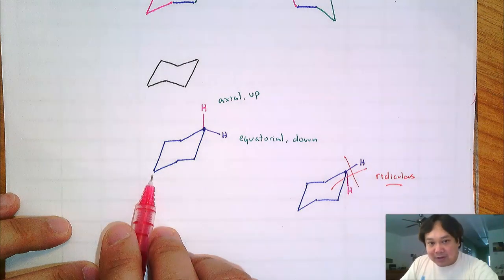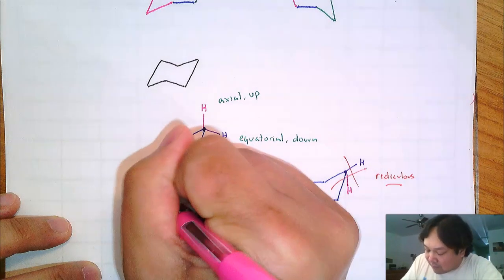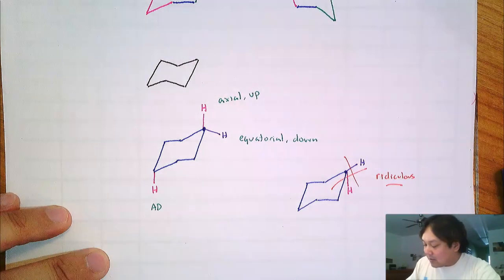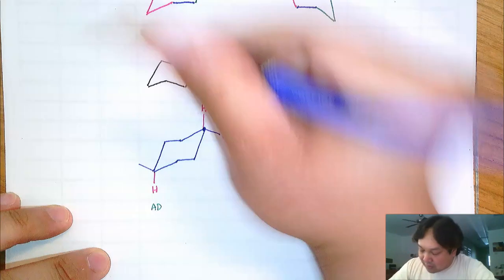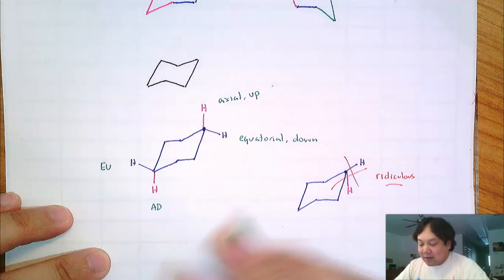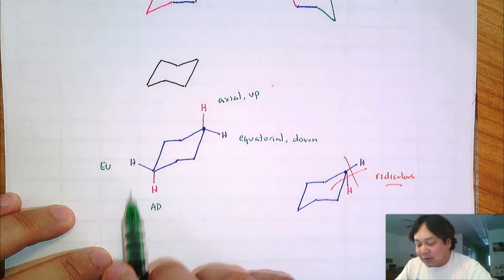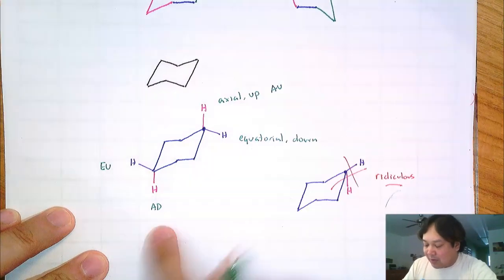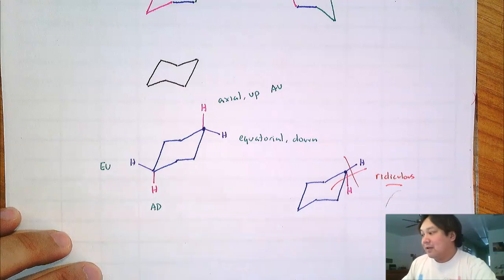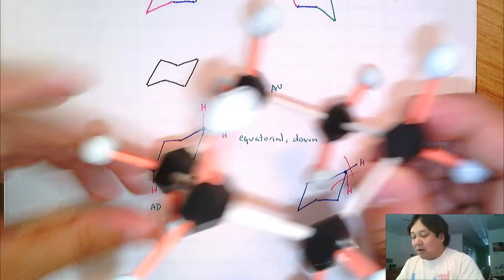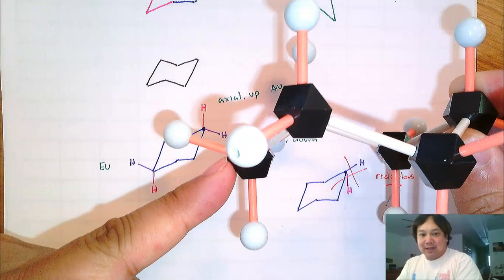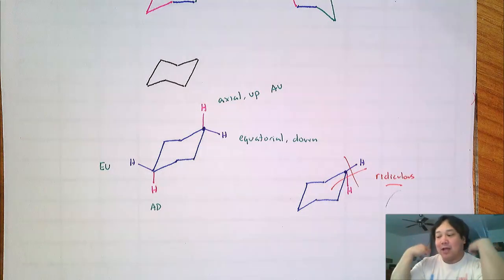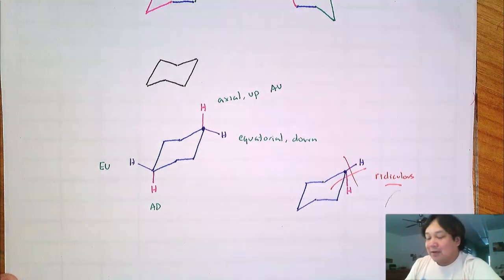If we look at the carbon on the other side across from this one, it makes more sense to have the axial hydrogen pointing down — axial down. And for the equatorial hydrogen, we have it up. What we notice is that one hydrogen is axial and the other is equatorial, and one is down while the other is up. Here we have axial up, there we have axial down. We can prove that with the models — look at the carbon all the way on the left. You can see that hydrogen is axial down, straight down, and the other hydrogen is equatorial up.